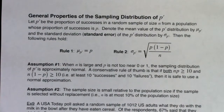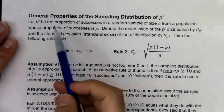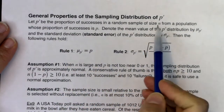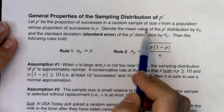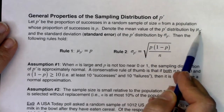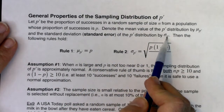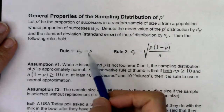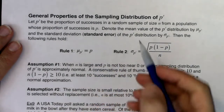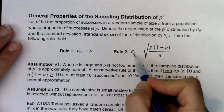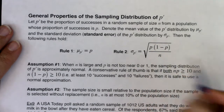Let's start picking up these rules. General properties for the sampling distribution of p-prime: let p-prime be the proportion of successes in a random sample of size n from a population whose proportion of successes is p. Denote the mean value of the p-prime distribution by mu sub p-prime, and the standard deviation — or standard error — of the p-prime distribution by sigma sub p-prime. The center for your sampling distribution will be wherever your population distribution is centered, and the standard deviation has this formula.